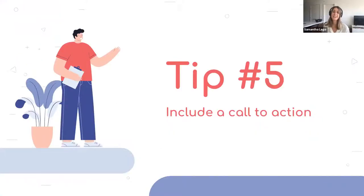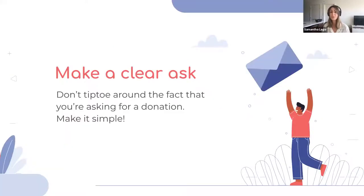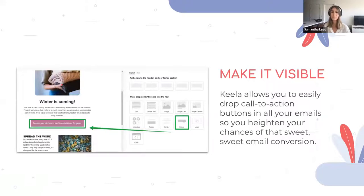Tip number five: include a call to action, or CTA. You'd be surprised how many emails have none or conflicting calls to action. Your CTA should send donors directly to your donation page — don't create friction points by making people click through multiple pages, because with every extra step you're giving donors a chance to walk away. Best practices: make a clear ask, don't tiptoe around asking for a donation; make it visible — the equivalent of a giant wacky inflatable flailing arm man, impossible to miss. Keela lets you easily drag and drop CTA buttons in your emails.